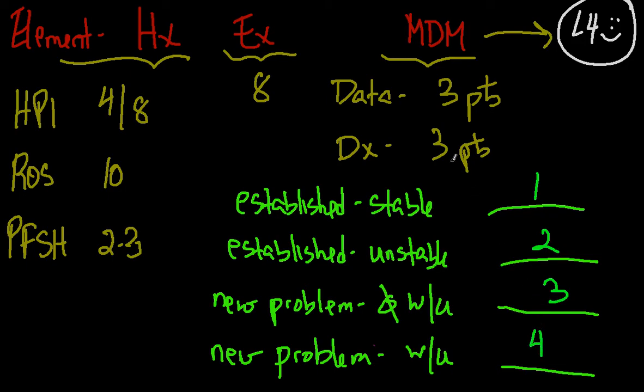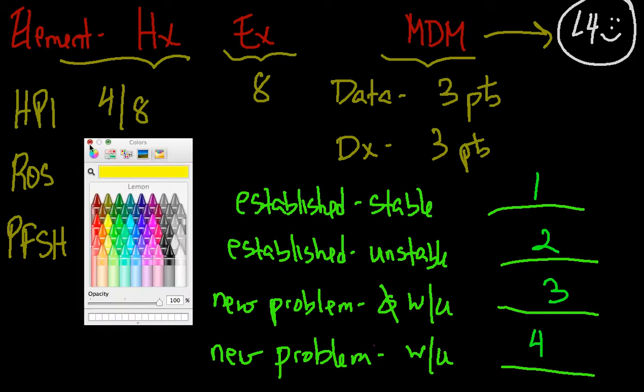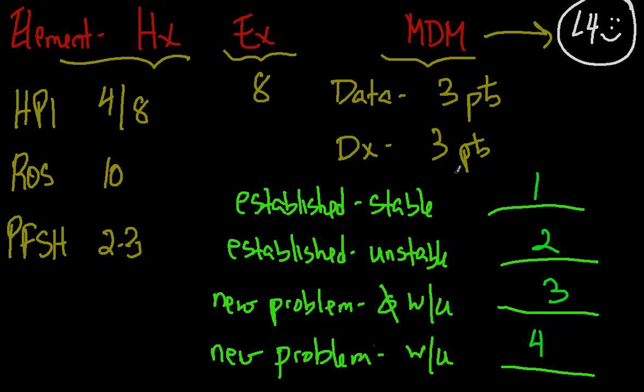You need a minimum of three to put yourself in position to bill for a level four. So let's walk through two scenarios, one with an established patient, one with a new patient, to determine how you can get three points or more.